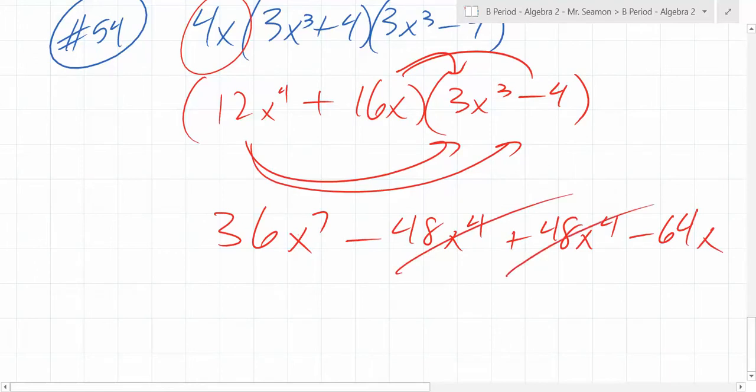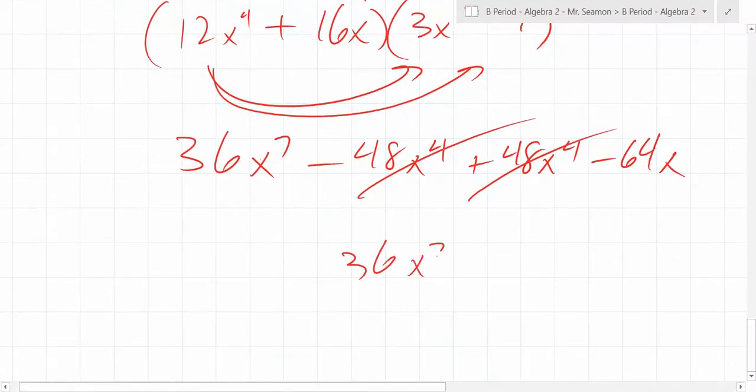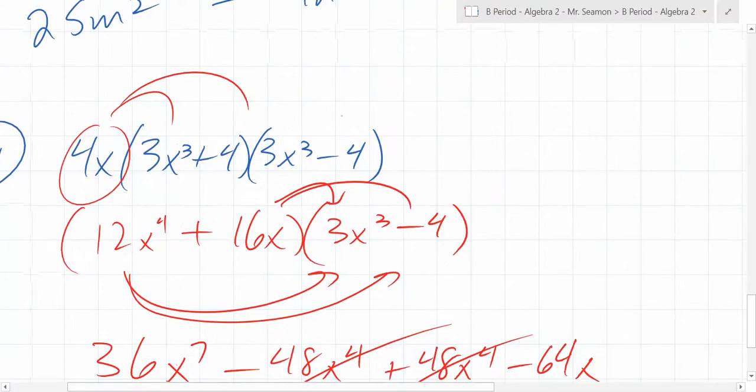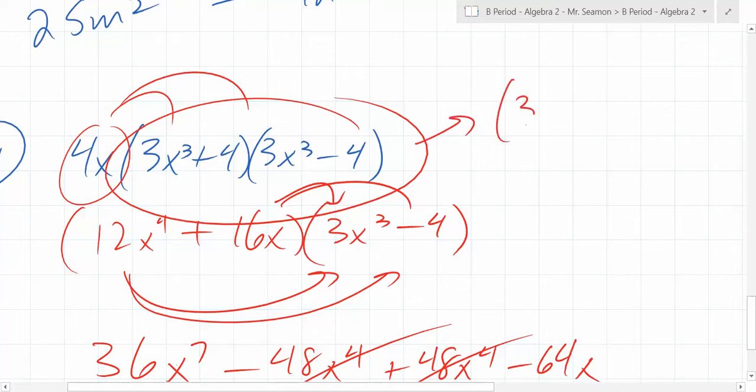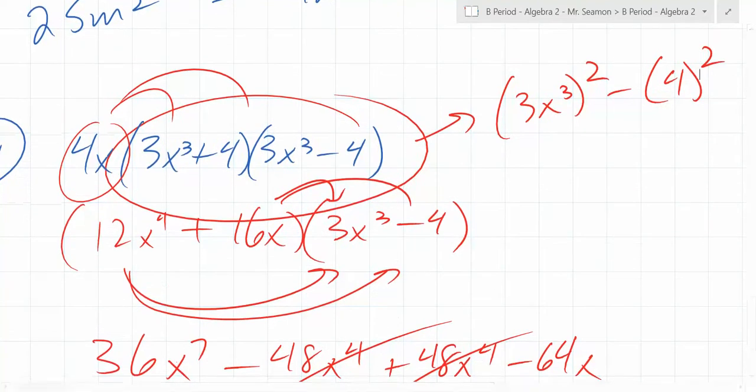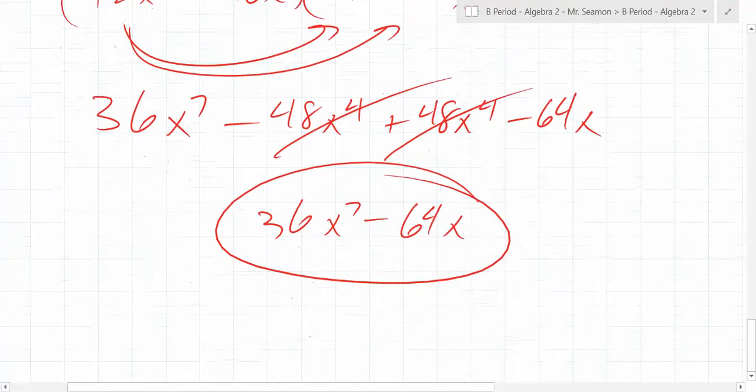And you get minus 64x. What can, oh, that cancels. And you're left with? 36x to the 7th minus 64x. Yup. You can do it either way. Now, could you just see this as a plus b times a minus b? That equals just 3x cubed squared minus 4 squared, right? That's what we got essentially, and then we multiplied it by 4x. It's just the difference of squares. That's all it is. It's the other one referenced.